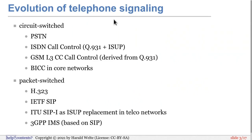In terms of packet-switched telephone signaling, there is H.323, which is an ITU standard that draws a lot from traditional circuit-switched ITU telephone signaling. On the other hand, there is IETF SIP — the Session Initiation Protocol — which has luckily become the dominant standard in voice-over-IP telephony on the internet. ITU then picked that up and specified SIP-I, an ISUP replacement in telco networks with all kinds of weird additions to SIP, but still fundamentally SIP. And then we have 3GPP IMS, the IP Multimedia System, which is also based on SIP signaling, but again with some derivations from plain SIP.